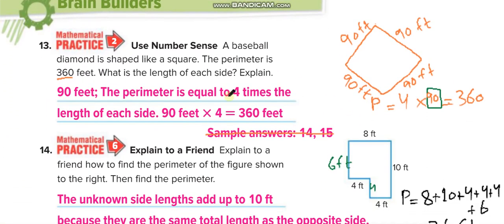A baseball diamond is shaped like a square. The perimeter is 360 feet. They give you the perimeter and want you to find each side: 4 times what equals 360? Four times 90 is 360, so each side is 90 feet.